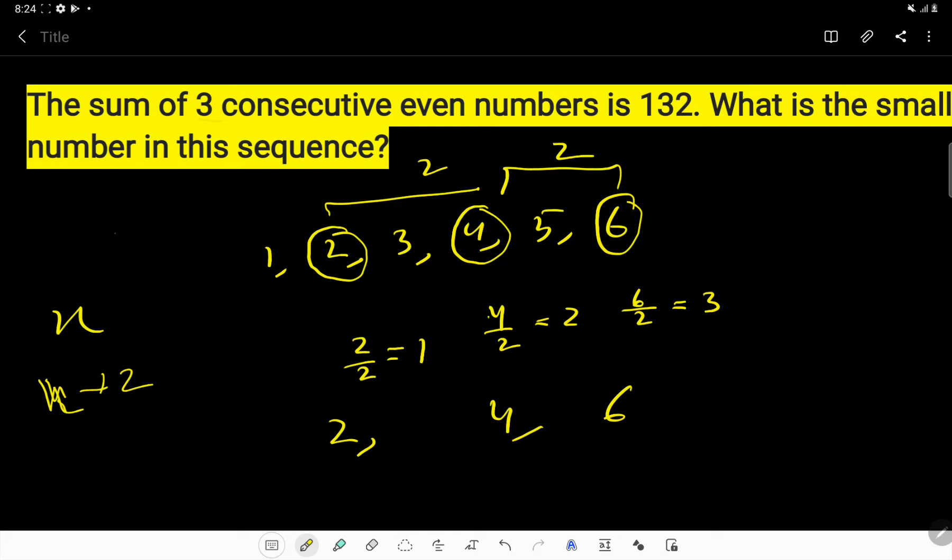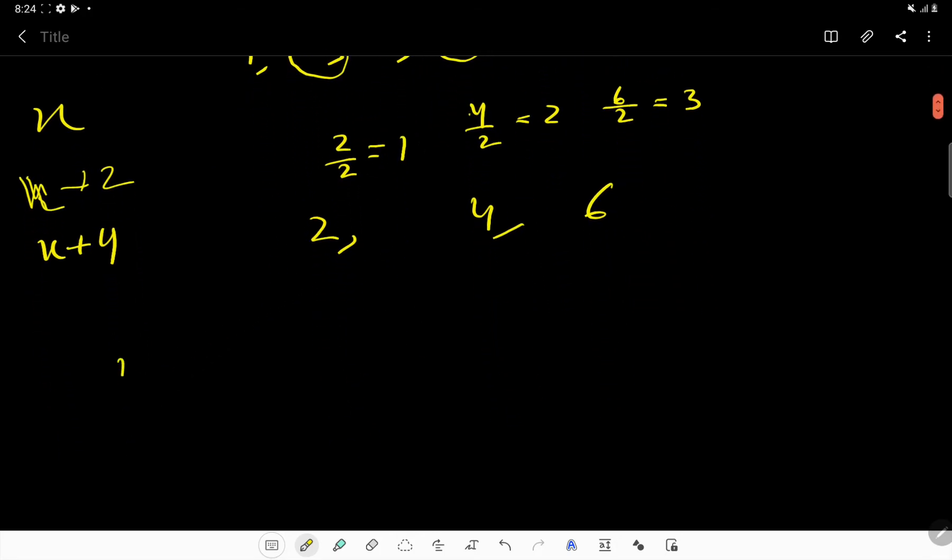And the third number will be x plus 4. The difference between x plus 4 and x plus 2 is always two. According to the condition of this math, the sum of these three numbers is 132.